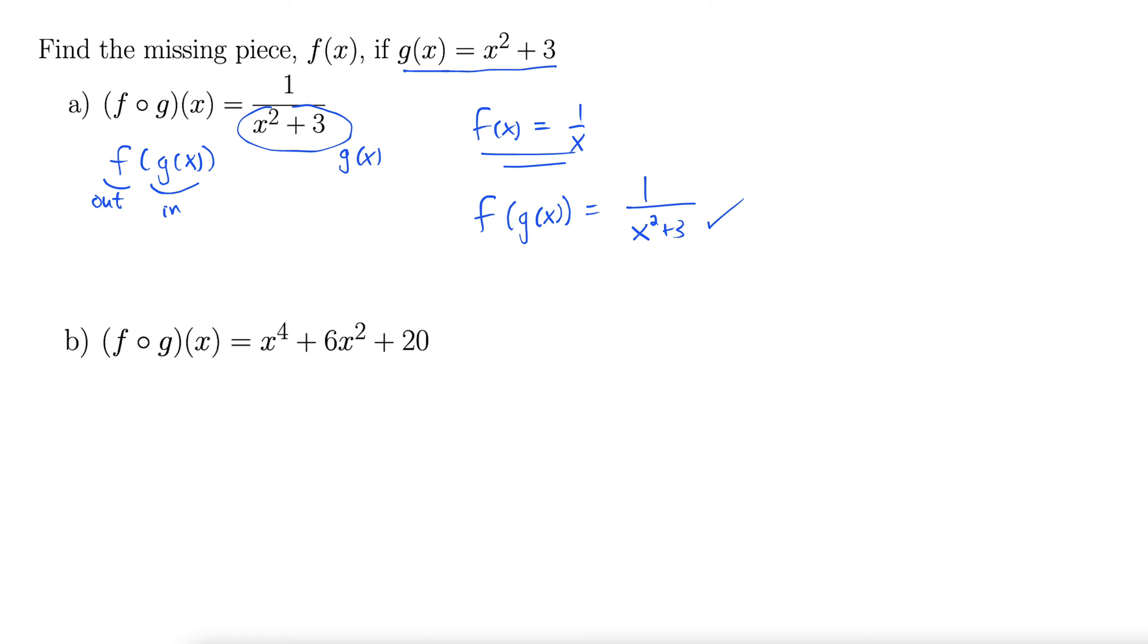For part b, we have f(g(x)) = x⁴ + 6x² + 20. That one's a little more complicated, but there's a method here.